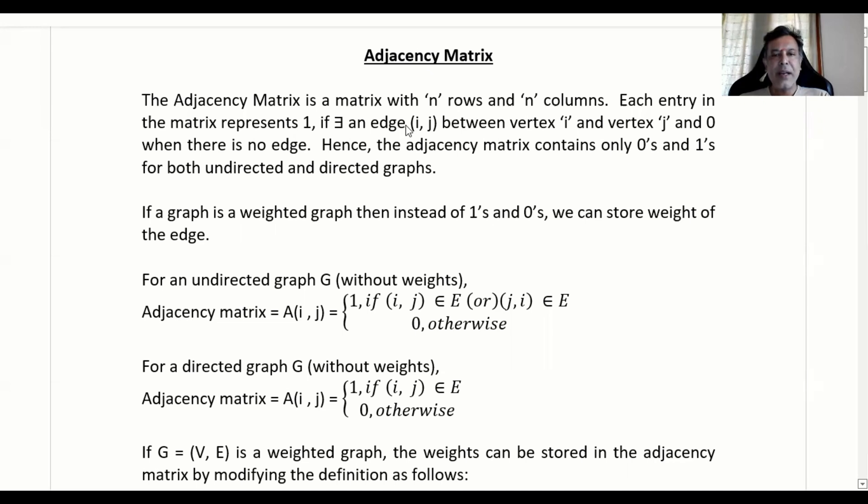Adjacency matrix is a matrix with n rows and n columns. Each entry in the matrix represents 1 if there exists an edge (i, j) between vertex i and vertex j, and if there is no edge then the value will be given as 0. Hence the adjacency matrix contains only 0s and 1s for both undirected and directed graphs.